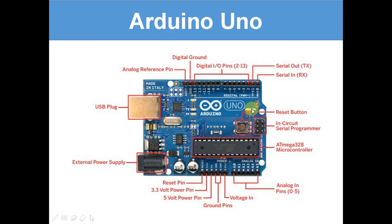For example, we could have on our computer a little ongoing readout to tell us how much voltage is going through it. The ATmega328 microcontroller — this is what actually runs the programs. This is the actual thing that runs the programs.